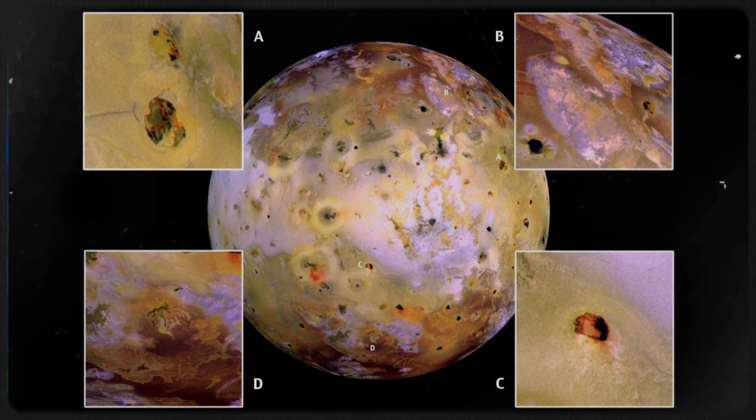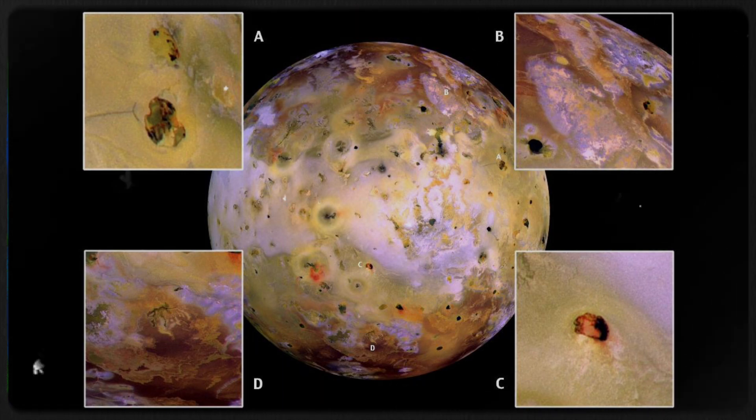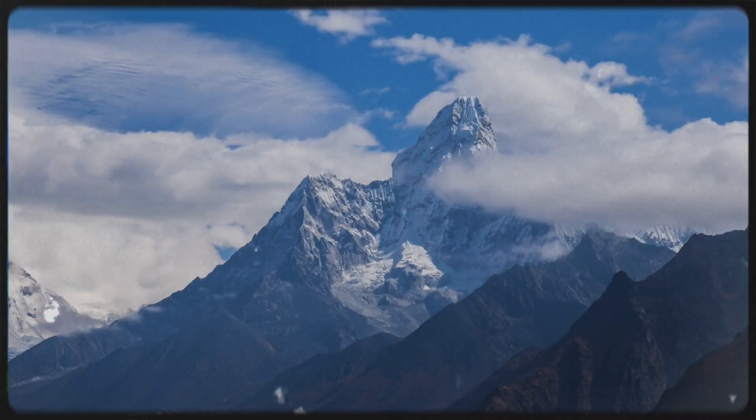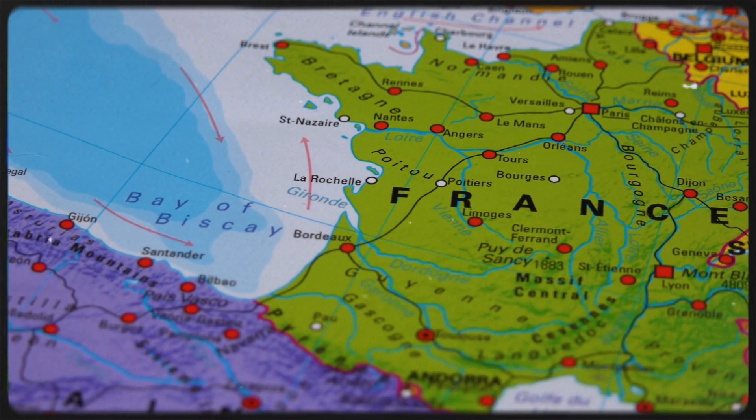The materials ejected by Io's volcanoes contribute to its vibrant colors and the strange ions detected by the LCP. Pele, the largest of Io's volcanoes, has produced plumes 30 times higher than Mount Everest, and its ash field is almost the size of France.